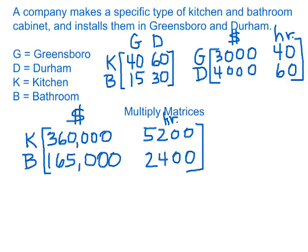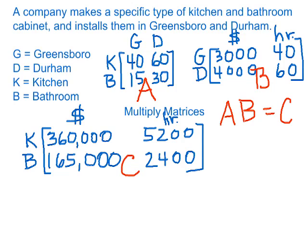Let's name these matrices: the first one A, the second one B, and the product C. So we multiplied A times B to get C. As noted in an earlier video, if A has an inverse, then you can express B as A-inverse times C, by multiplying both sides of the equation by the inverse of A. This tells us how to determine B if we know A, can find its inverse, and know C.